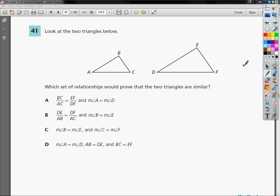This is the 7th grade TCAP practice test for math. This is question number 41. The question says, look at the two triangles below. Which set of relationships would prove that the two triangles are similar?